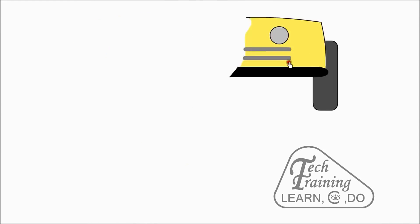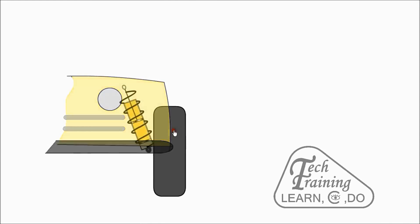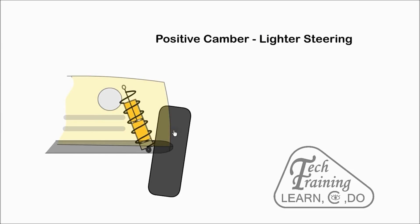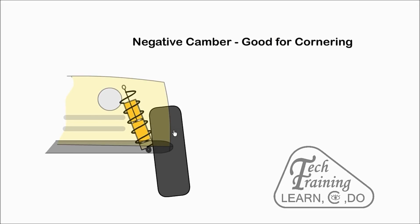When viewed from the front, the tilt of a wheel is called camber. If the wheels lean out at the top, it is called positive camber. With negative camber, the bottom of the tyre is further out than the top. This helps to improve cornering ability.